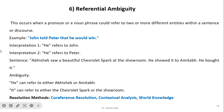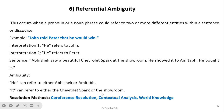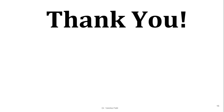Last is referential ambiguity. This occurs when a pronoun or noun phrase could refer to two or more different entities within a sentence or discourse. For example, 'John told Peter that he would win' — does 'he' refer to John or Peter? Another example: 'Abhishek saw a beautiful Chevrolet Spark at the showroom. He showed it to Amitabh. He bought it.' Here 'he' can refer to either Abhishek or Amitabh, and 'it' can refer to the Chevrolet Spark or the showroom. Resolution methods include coreference resolution, contextual analysis, and world knowledge. This is all about ambiguity present at various levels in English language. In the next video, ambiguity will be explained for languages like Marathi and Hindi. Thank you.